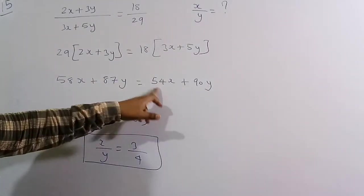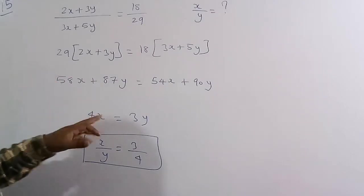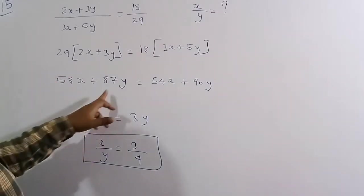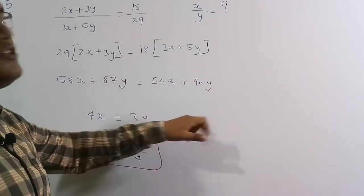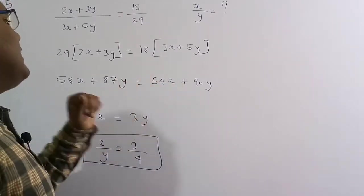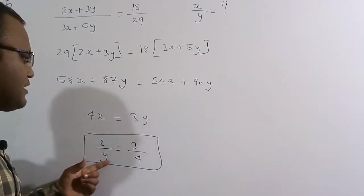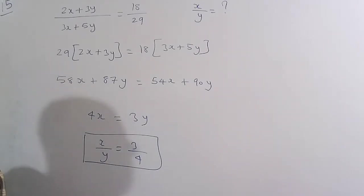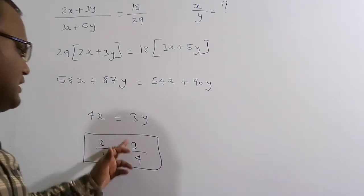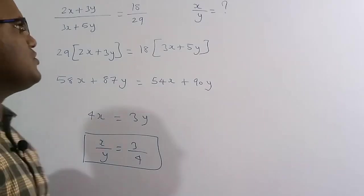Rearranging: 58x − 54x = 90y − 87y, so 4x = 3y, meaning x/y = 3/4. Therefore the ratio x:y = 3:4 is the correct solution.